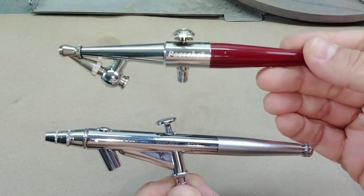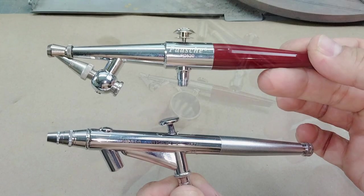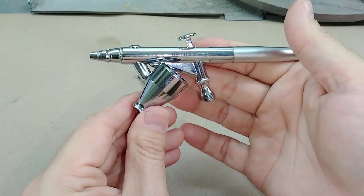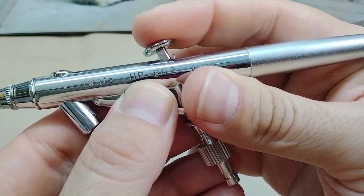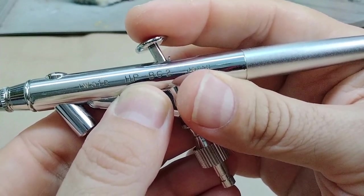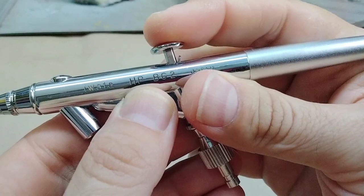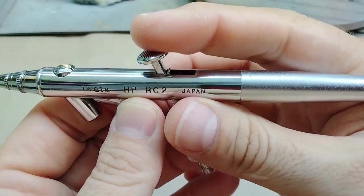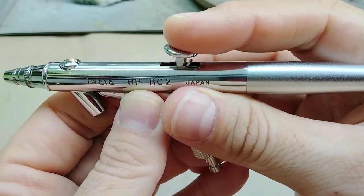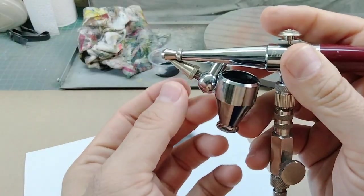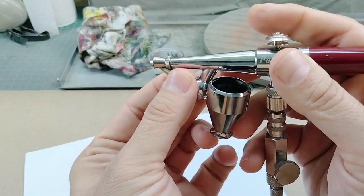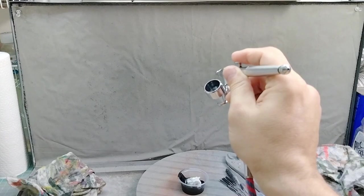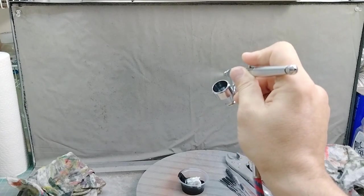The siphon portion of this airbrush works just the same as the other one, using air pressure to draw paint up into the nozzle. Now with a double action trigger, not only can you control air pressure by pressing down on the trigger, but when you pull back on the trigger, you're able to control paint flow by closing and opening the nozzle. Unlike the previous airbrush, where you have to manually open and close the nozzle by twisting on it, with a double action trigger you're able to control paint flow on the fly.